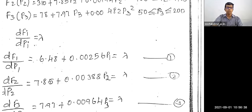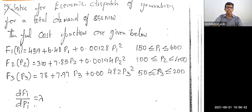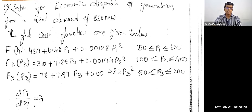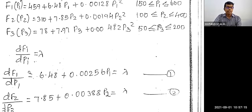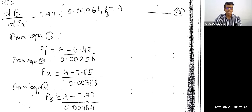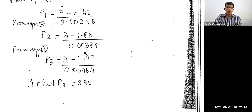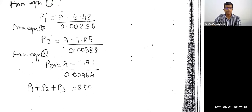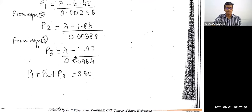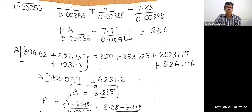The total demand is 850 MW, so P1 + P2 + P3 = 850 MW — take this as equation number 4. Substitute P1, P2, and P3 into equation 4. Take the lambda terms to the left-hand side and the constants to the right-hand side. You can simplify easily using a scientific calculator.